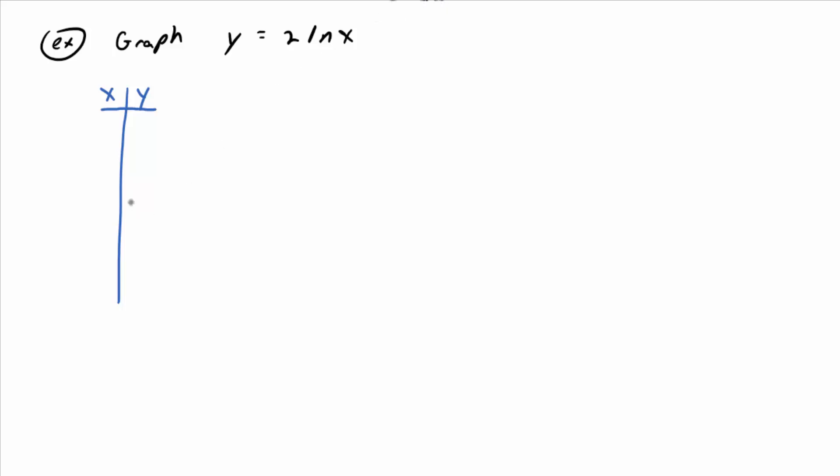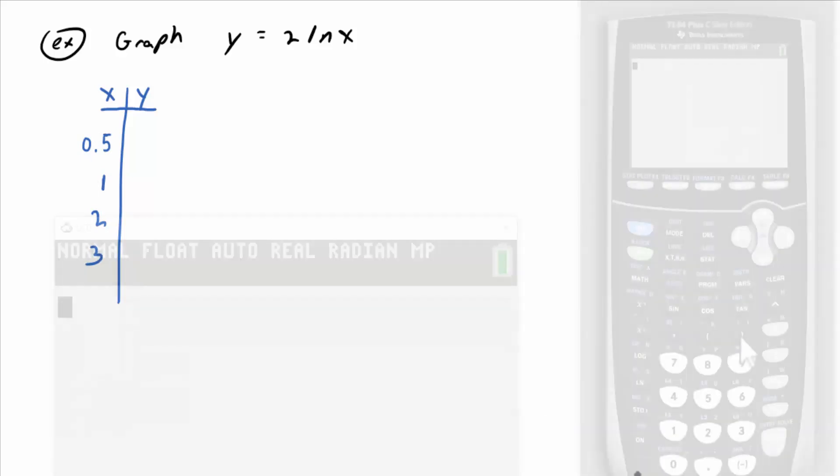So what do you want to start with then for your inputs? One would be a good start, but we should probably plug in a fractional, a proper fraction. So like maybe 0.5. And then two, maybe three. Let's see what we get.